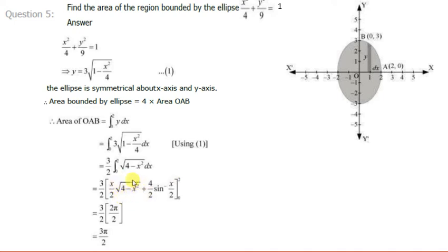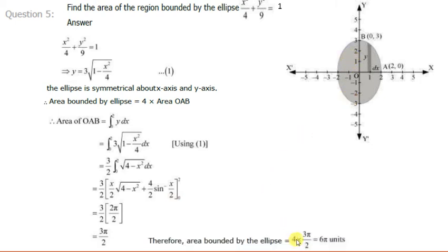When x = 2, the square root term becomes 0, and we get 2 sin⁻¹(1). When x = 0, both terms become 0 since sin⁻¹(0) = 0. So we are left with 2 sin⁻¹(1) = 2 × π/2 = π. The area of the first-quadrant part is (3/2) × π = 3π/2. Multiplying by 4 gives the total area of the ellipse as 6π square units.